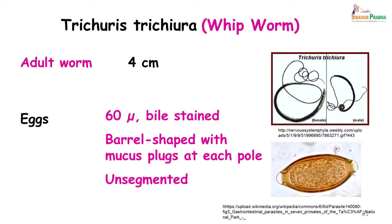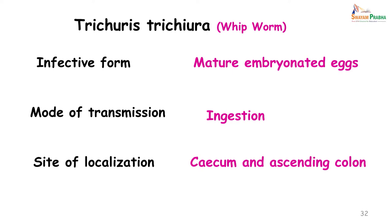The eggs are 60 microns in size, bile-stained, barrel-shaped with mucous plugs at each pole, and unsegmented. This is the morphology of the whipworm adult worm as well as the ova. The infective form of whipworm is a mature embryonated egg and the mode of transmission is ingestion. The site of localization is in the cecum and ascending colon, unlike the roundworm which lives in the small intestine.